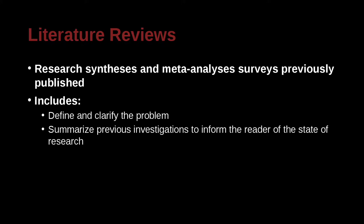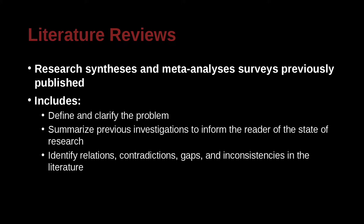The goal is so that a reader interested in the topic doesn't have to search for all of those sources. You identify relationships, contradictions, gaps, and inconsistencies in the literature, and you try to come up with some kind of system — some relation among all of this information. Whether that's 50 articles, 90 articles, and 25 books, you figure out what they mean together. That's the goal of a literature review research paper or thesis.